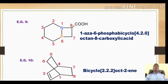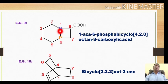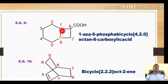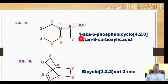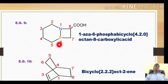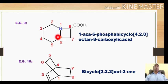Example 9: Bridged atoms are nitrogen and phosphorus. Priority order for heteroatoms is oxygen, sulfur, nitrogen, phosphorus — so nitrogen gets priority. Numbering: 1, 2, 3, 4, 5, 6, 7, 8. Nitrogen at position 1 is '1-aza'; phosphorus at position 6 is '6-phospha'. A carboxylic acid group at position 8 is named. Distances: 4, 2, and 0. The name is 1-aza-6-phosphabicyclo[4.2.0]octane-8-carboxylic acid.